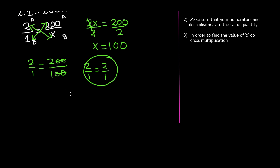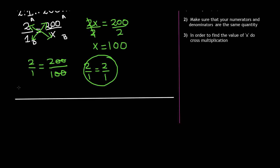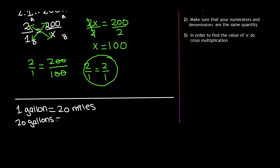Let's say we are in a car, and for every 1 gallon of gas that we are using, we are traveling 20 miles. What we want to find out is: if we are using 20 gallons of gas, how many miles are we traveling? We don't know how many miles, so we're going to put X miles.